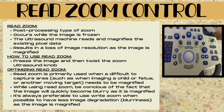To use read zoom, you freeze the ultrasound image and then twist the zoom knob. Read zoom is primarily used when a difficult-to-capture area — such as when imaging a moving child, fetus, or another moving target like the heart — needs to be magnified. While using read zoom, be really conscious of the fact that the image will quickly become blurry as it is magnified.